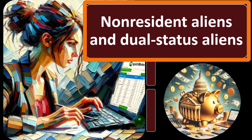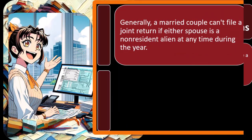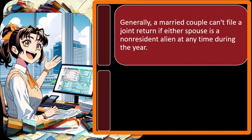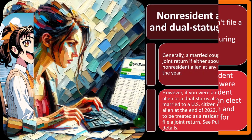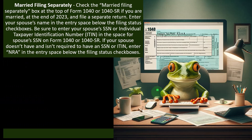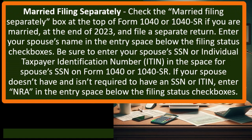Innocent spouse relief applies when one spouse did things the other didn't know about, potentially relieving the 'victim' spouse of liability. This goes beyond normal tax preparation but comes up fairly often. Regarding non-resident aliens: generally a married couple can't file jointly if either spouse is a non-resident alien at any time during the year. However, if you were married to a U.S. citizen or resident alien at the end of 2023, you can elect to be treated as a resident alien and file jointly. See Publication 519 for details.